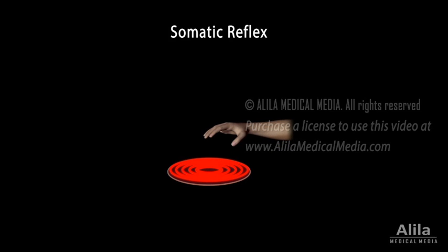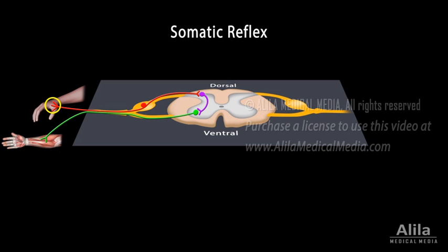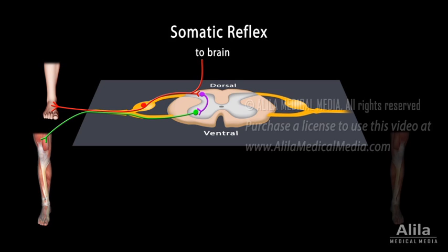Reflexes are essentially automatic and do not require input from the brain, although the brain is informed and aware, usually after the fact. A somatic reflex involves a reflex arc composed of a somatic receptor, a sensory neuron, an interneuron, a motor neuron, and an effector muscle. Some reflexes are, however, more complex and require multiple pathways, as well as central coordination from the brain. For example, when someone steps on something sharp and lifts their injured leg, the other leg also must react to keep balance or the person would fall over. This involves multiple muscles and requires contralateral pathways at several levels of the cord, as well as movement coordination from the brain.